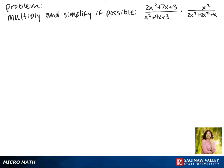Today we'll be multiplying and simplifying, if possible, the expression 2x² + 7x + 3 over x² + 4x + 3 times x² over 2x³ + 3x² + x.